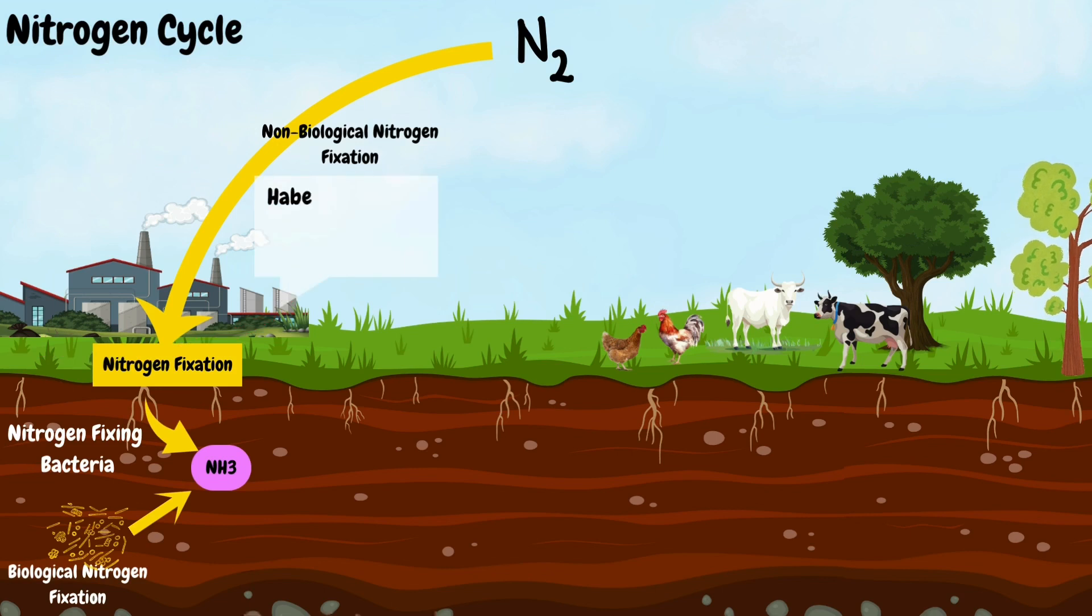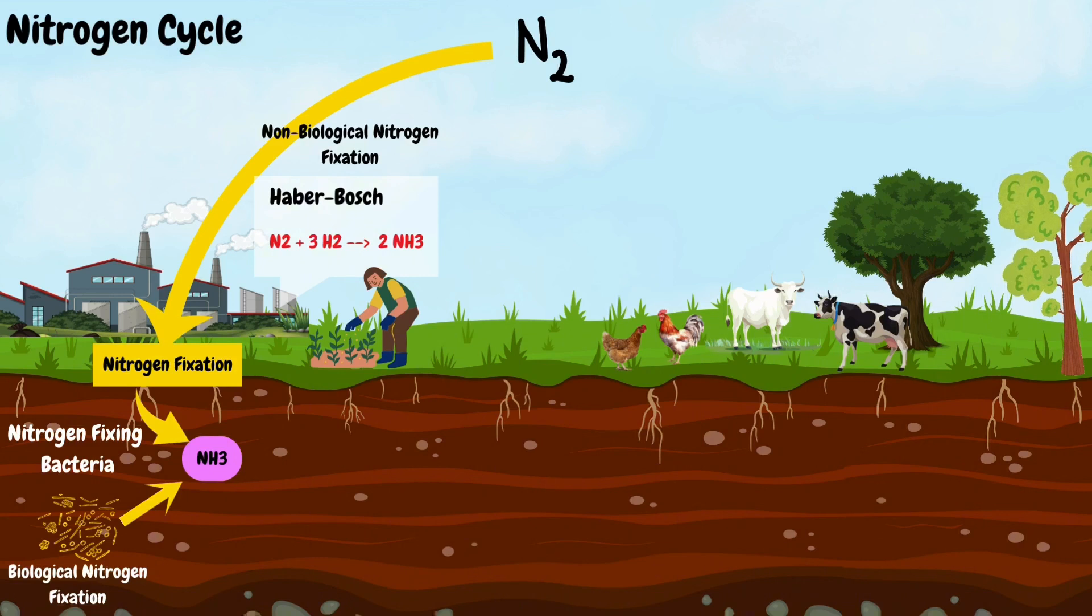For example, the Haber-Bosch process produces ammonia from atmospheric nitrogen and hydrogen gas, which is used for the production of fertilizers. So fertilizers become another source of ammonia.